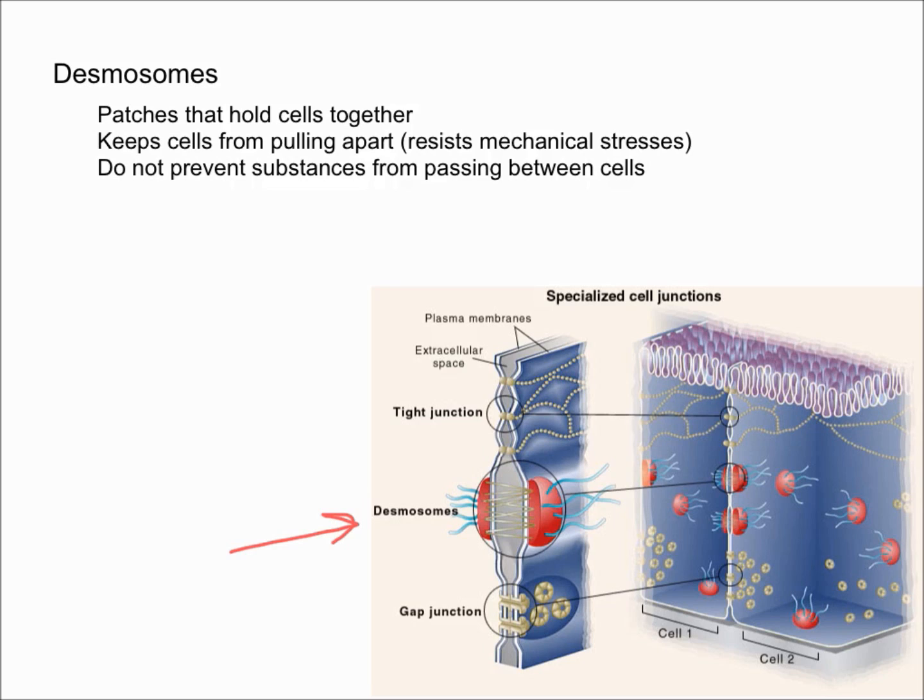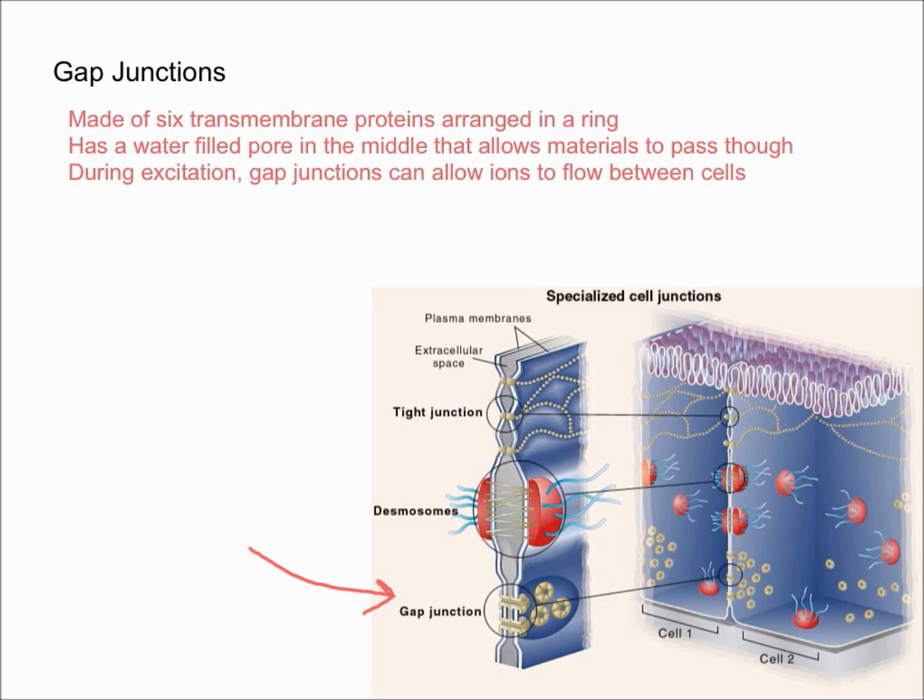Finally, let's talk about gap junctions, the last one. Gap junctions are made up of six transmembrane proteins arranged in a ring. As you can see down here in the diagram, the gap junction forms a water-filled pore in the middle.